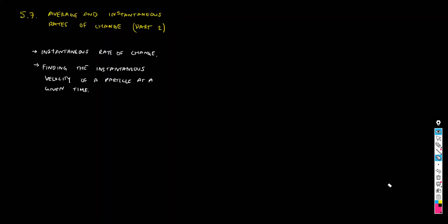Hello class, welcome to the second part of Lesson 7, 5.7, Average and Instantaneous Rates of Change. In the first part we talked about the average rate of change, and I believe it was a much better explanation than the first lesson we had about this. By now you should understand what the average rate of change of a variable is with respect to another.